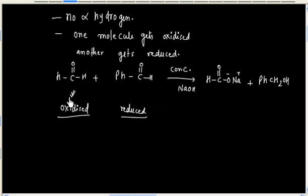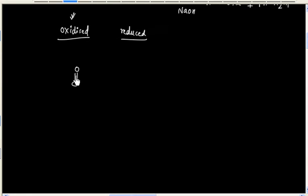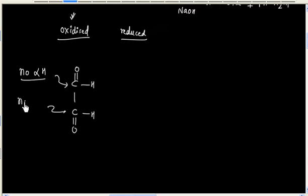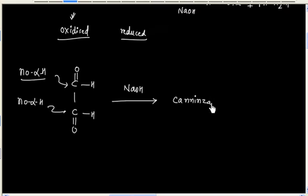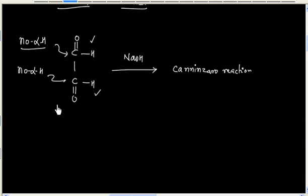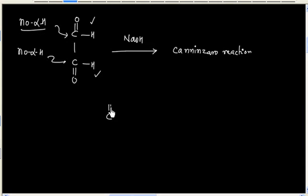Now, the two molecules that get oxidized and reduced can be in the same molecule. For example, consider this compound. In this case, this carbonyl carbon has no alpha hydrogen and this carbonyl carbon also has no alpha hydrogen. So if this compound is treated with NaOH, it will give the Cannizzaro reaction. This time, one part gets oxidized and another gets reduced — both happen inside the same molecule.